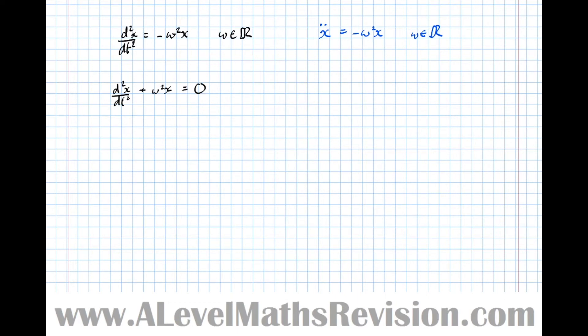Finding the auxiliary equation we get m² plus omega squared. There's no middle term, there's no first differential of x. So equals zero. Solving that, m² equals minus omega squared, which means that m equals plus or minus omega i. So it's a complex number with only an imaginary part to be precise.